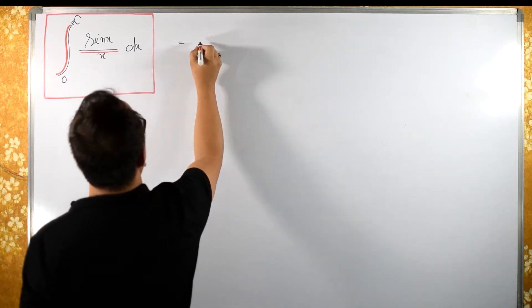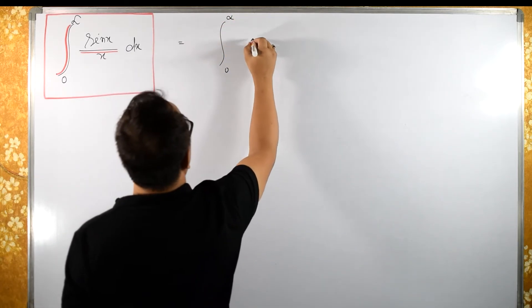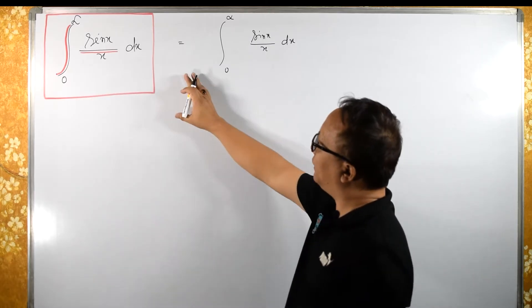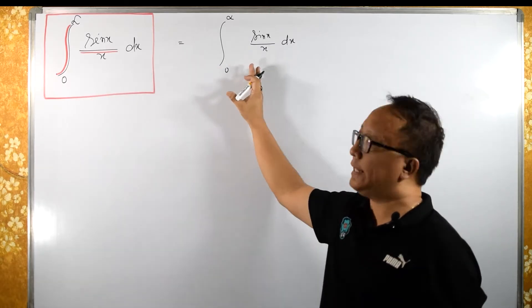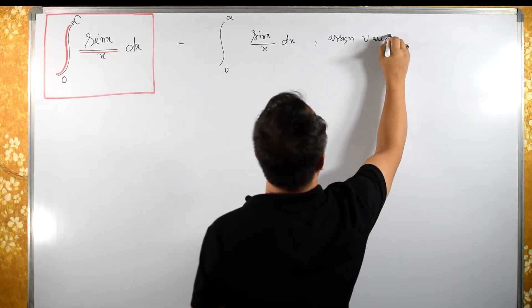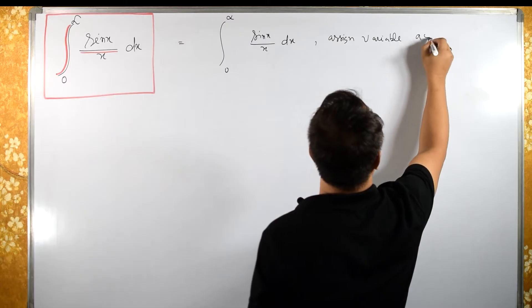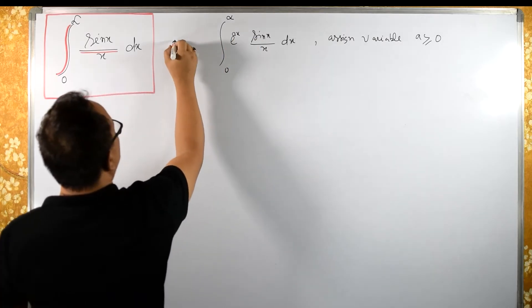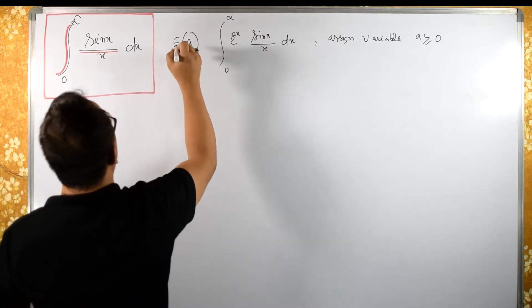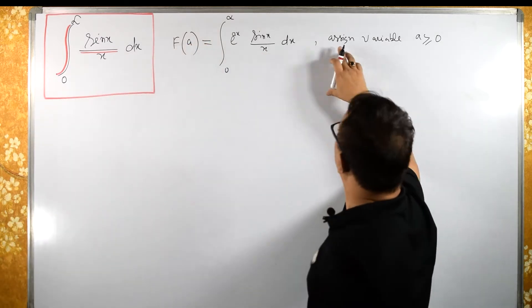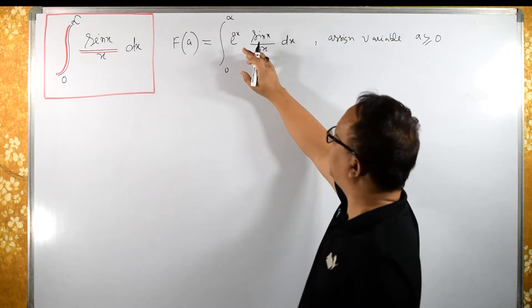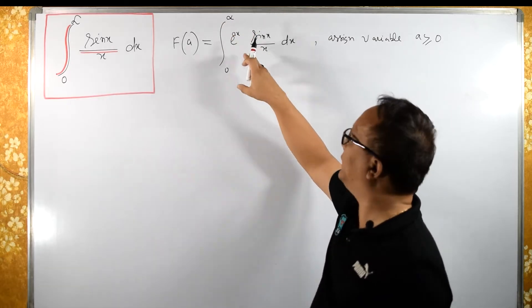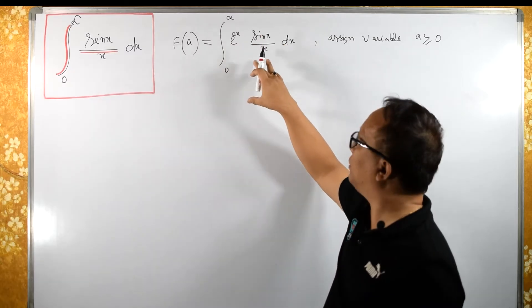This integral equals the integral from 0 to infinity of sin(x)/x dx. To integrate this, we need to assign some variable — a parameter — where a strictly equals 0. Now here, introducing e^(-ax), let us say this is variable a, so I will write f(a) equals this integral. The reason for assigning e^(-ax) is that if I differentiate with respect to a, I will get an x which cancels with the x in the denominator.